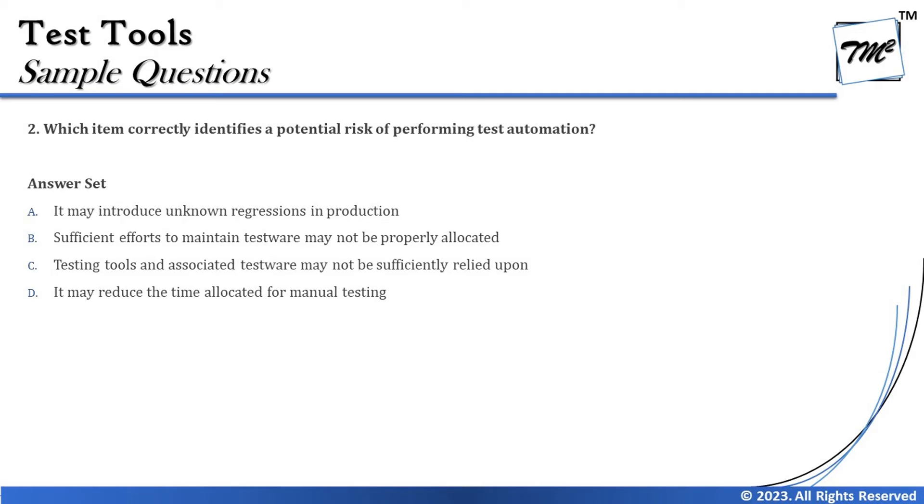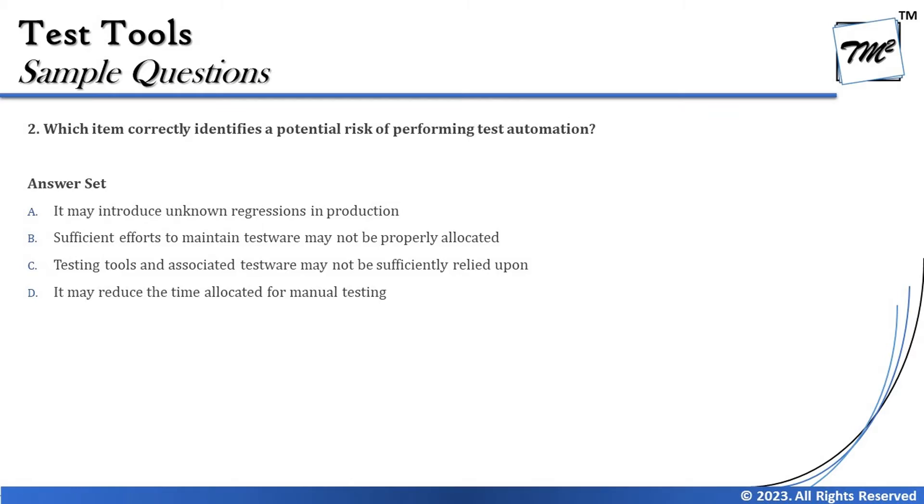Option C says testing tools and associated testware may not be sufficiently relied upon. If you recall, one of the identified risks was over-reliance on the tool — but sufficient reliance and too much reliance are two different things. We gave the example of an automated washing machine: we rely on it for washing but don't over-expect from it. Over-reliance is a risk, but sufficient reliability is a must — if I can't rely on a tool sufficiently, I don't need it at all. So option C is not a risk.